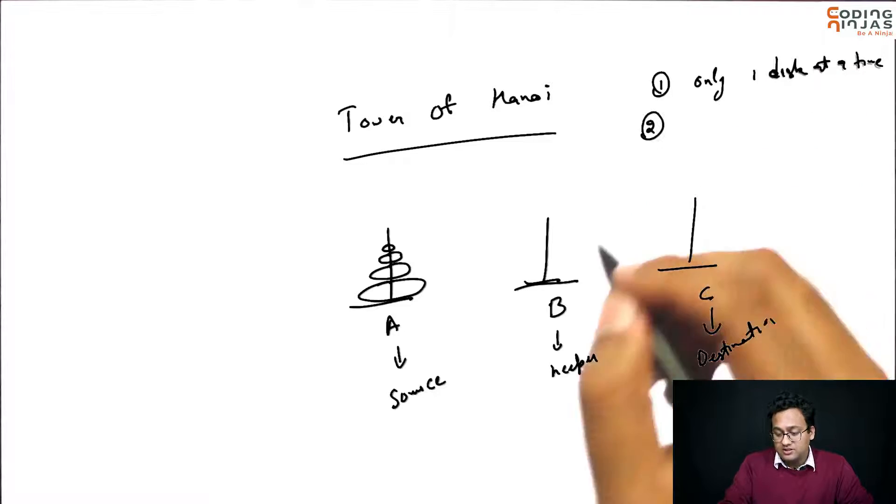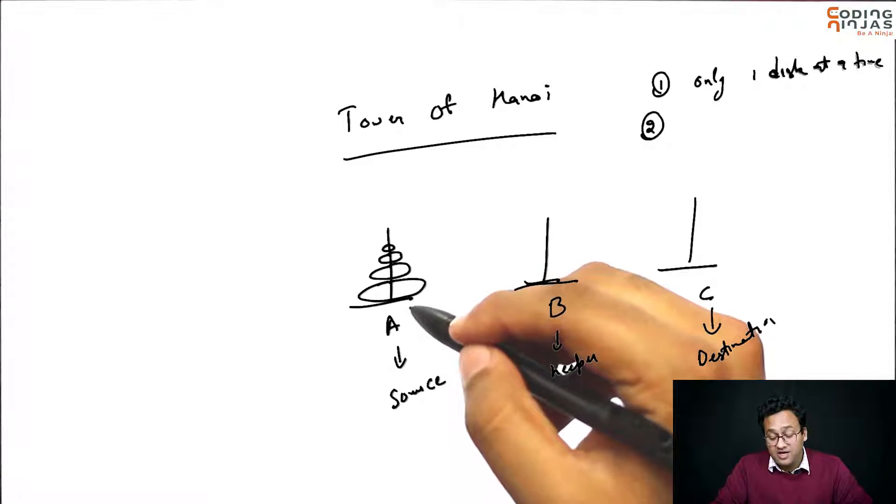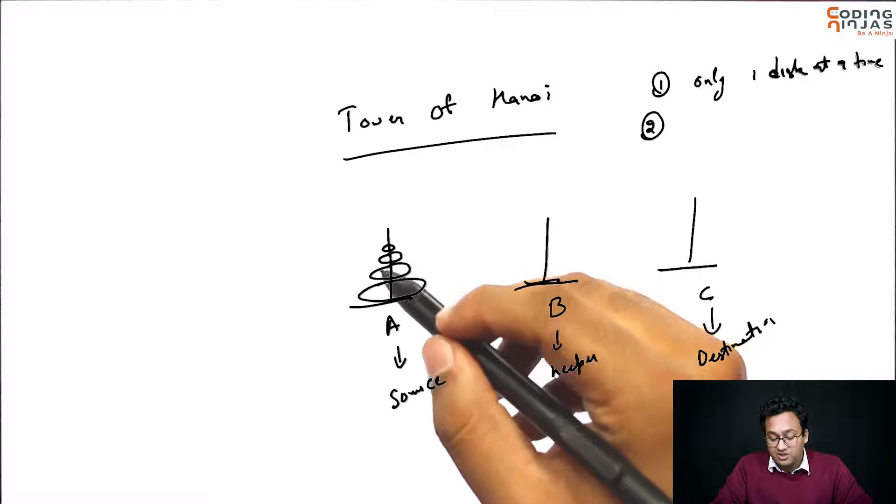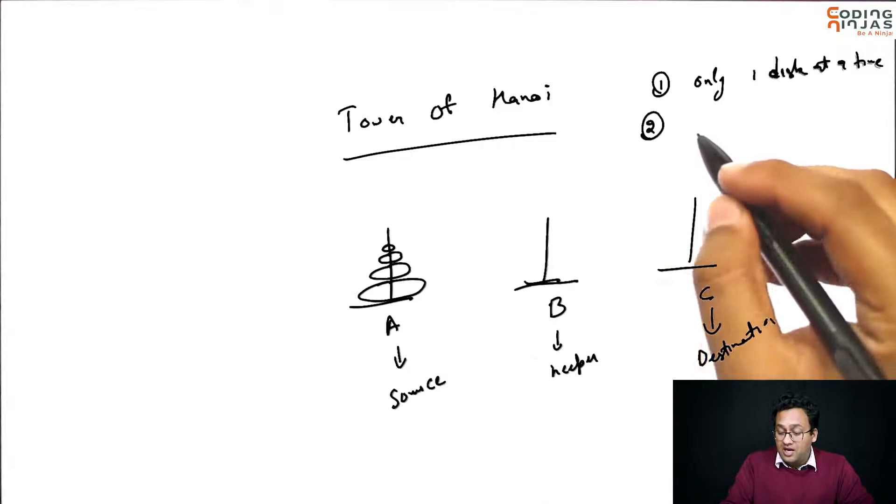Second rule is the way you see here, the way I have drawn it, the largest disk is at the bottom, then the larger, then the smaller one, then the smaller, and the smallest one is at the top.